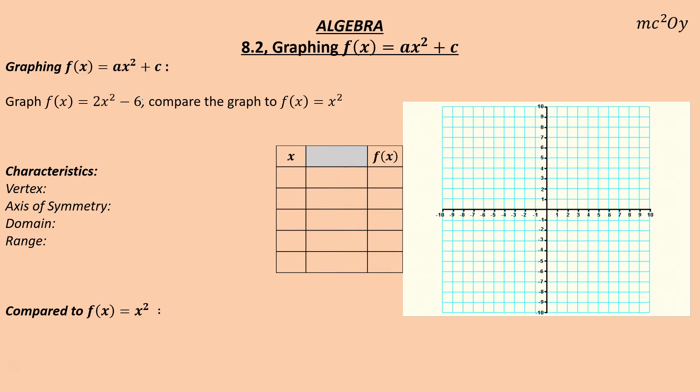We have now 2x² - 6 that we're going to graph. And notice there's a 2 and a -6. So let's put our parent function in there again: (0,0), (1,1), (2,4), (3,9), and reflect those points.